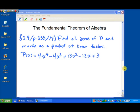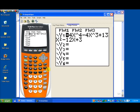In this case, P of x is equal to 4x to the 4th minus 4x cubed plus 13x squared minus 12x plus 3. Let's go ahead and graph this so we can get an idea of what the function looks like first.